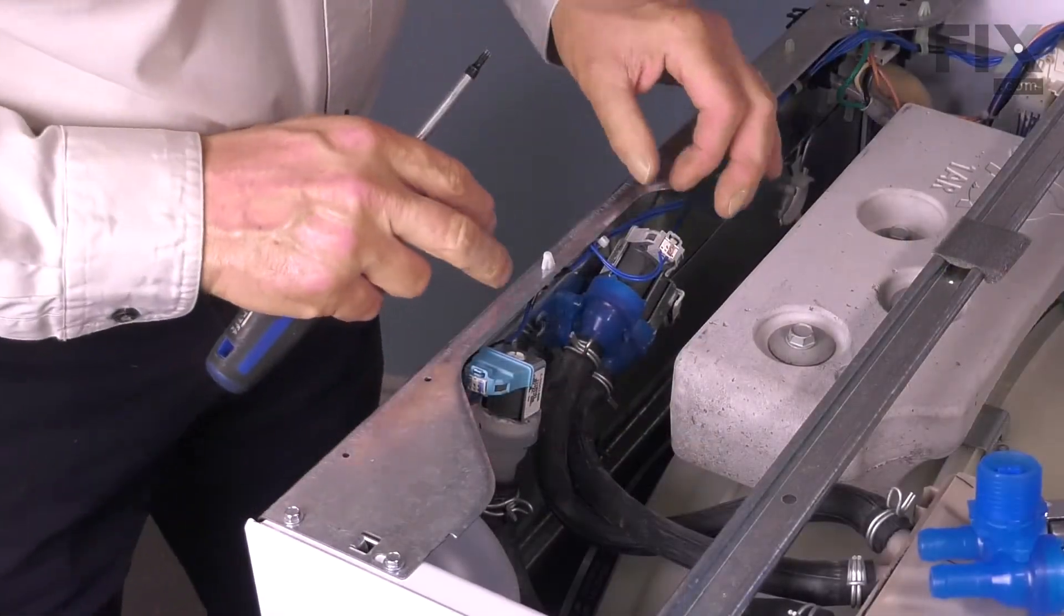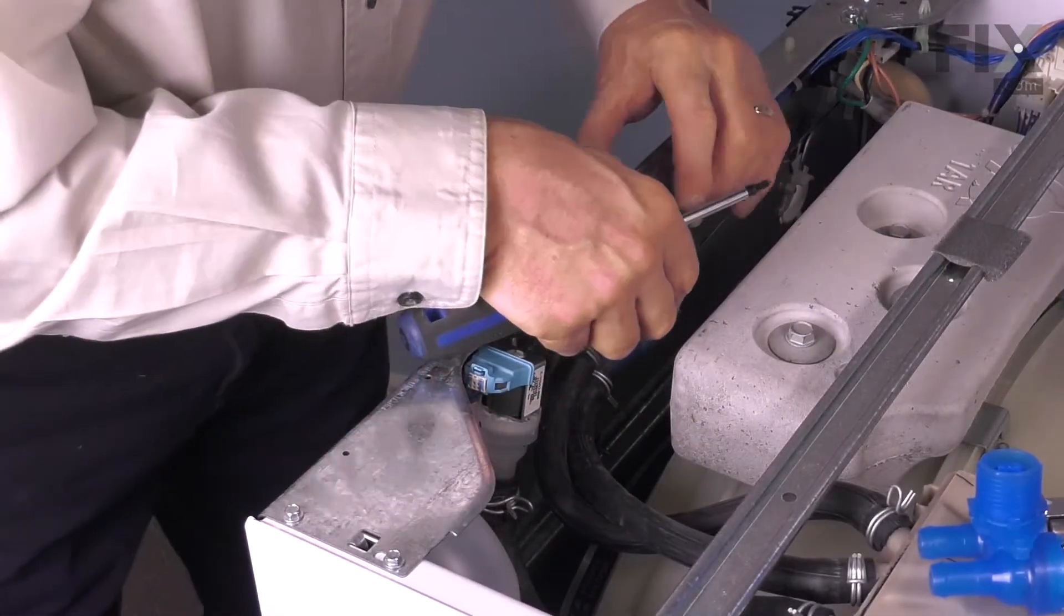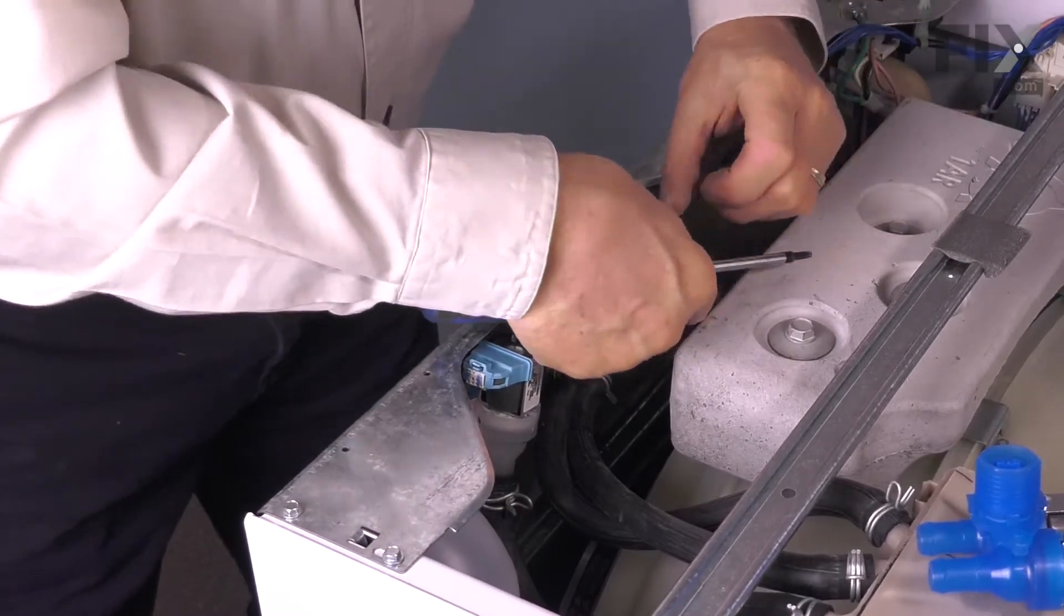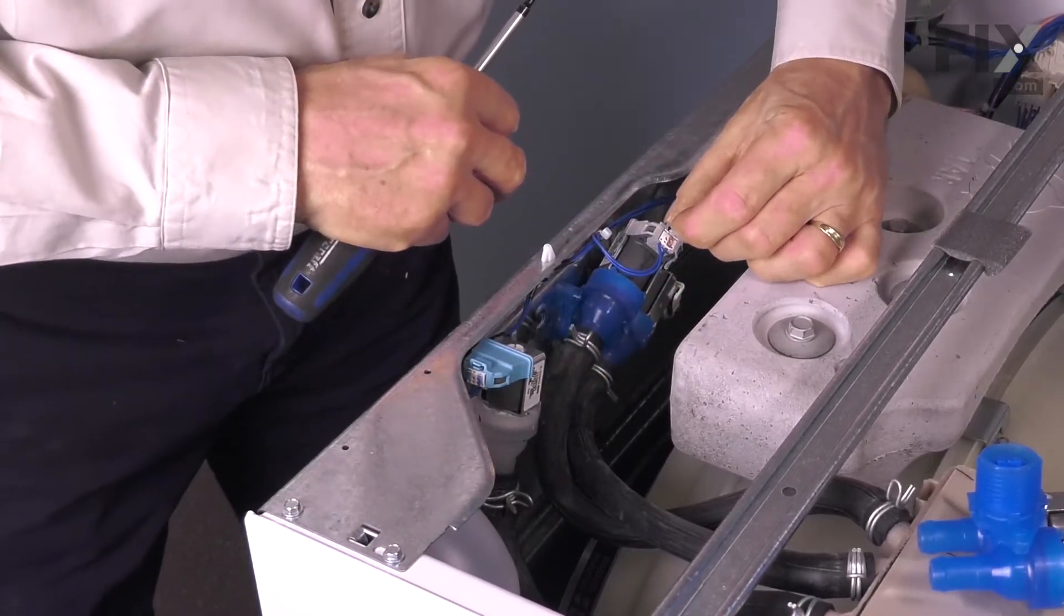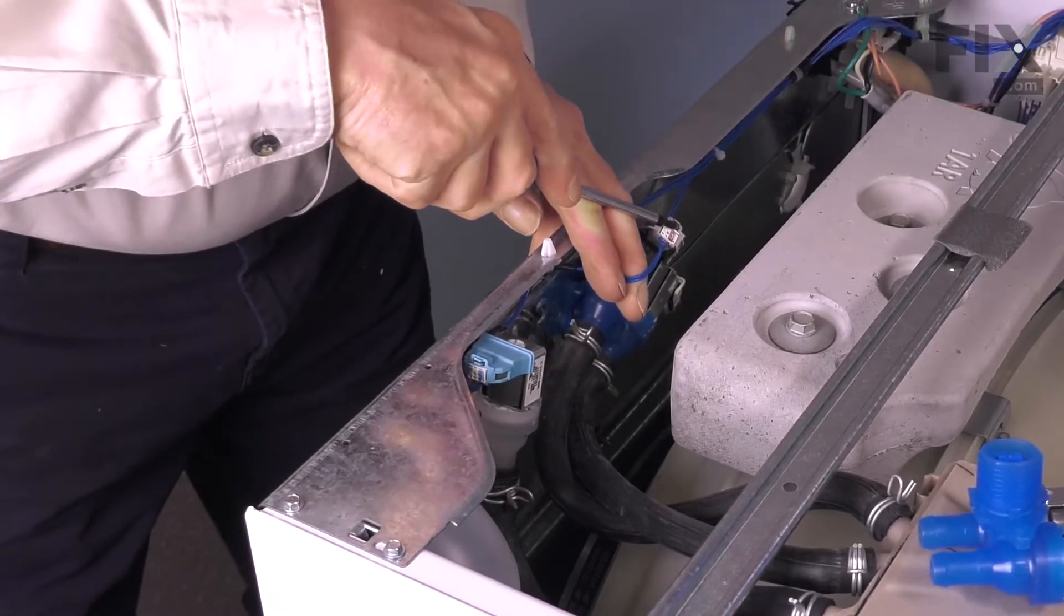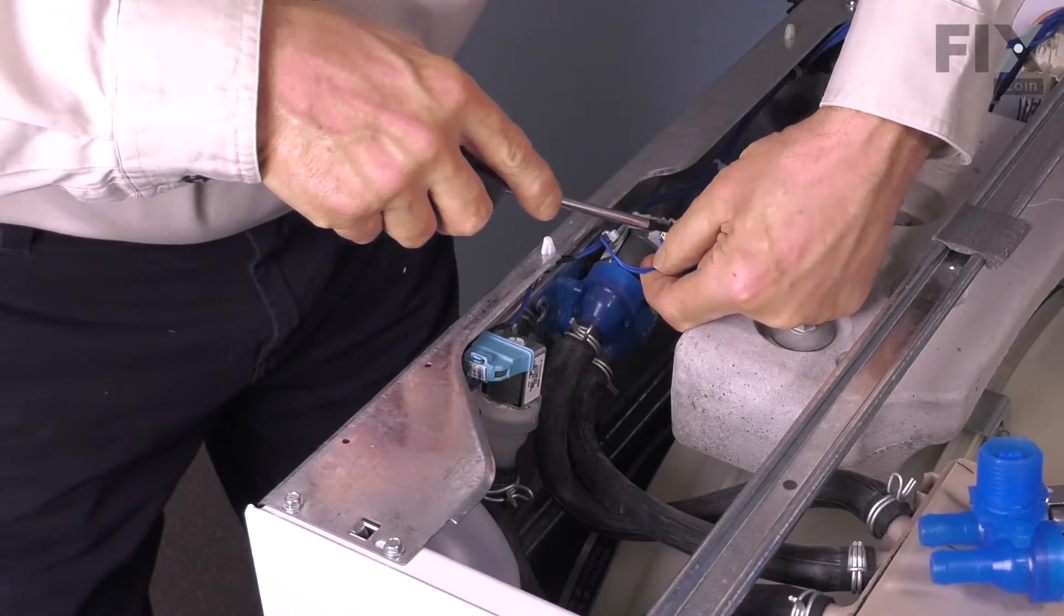Now with the top out of the way, our next step will be to disconnect the harness connector, the top coil on that valve. Just release that little locking tab, pull back on it while lifting up on the harness.